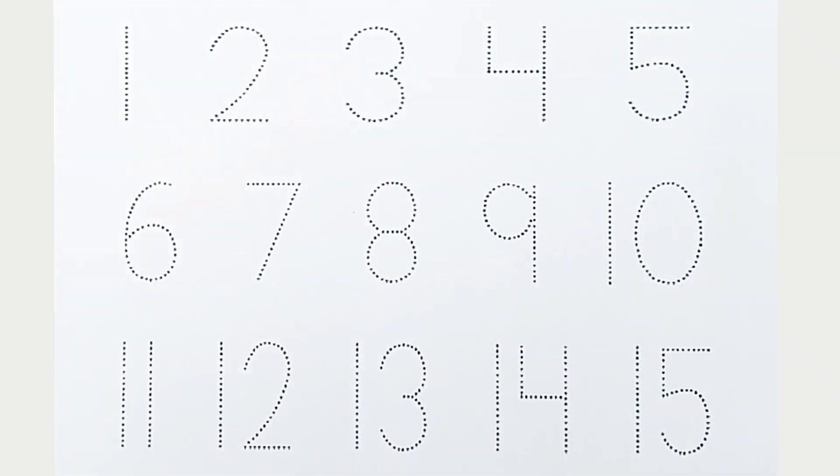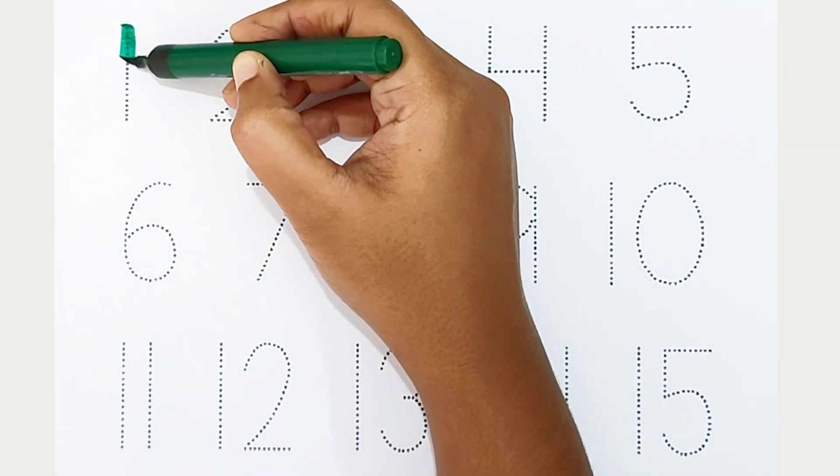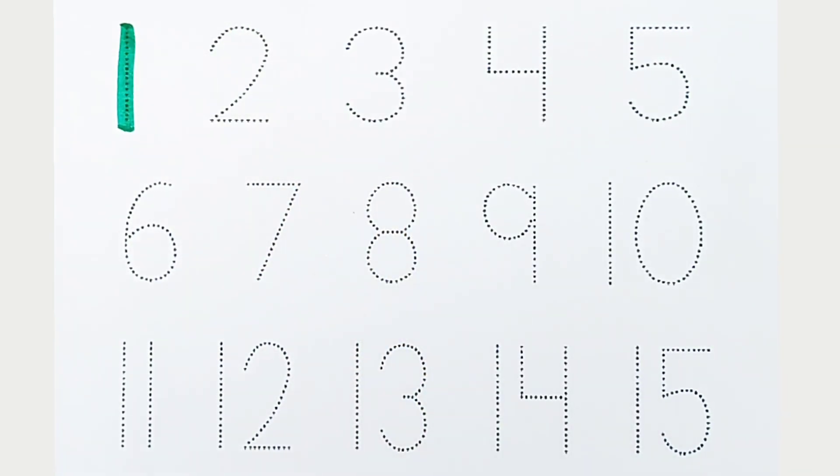Hi kids, today we can learn the numbers from 1 to 15. Let's begin. One, dark green color. One, dark green color.